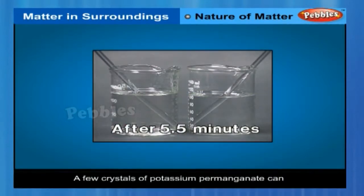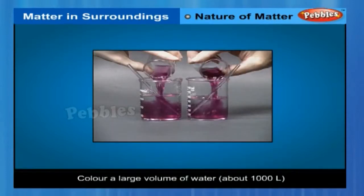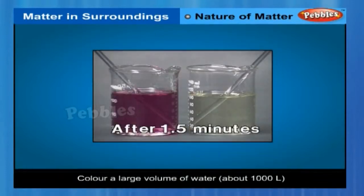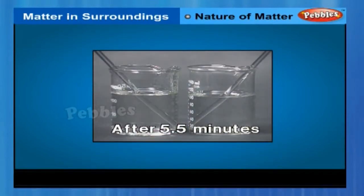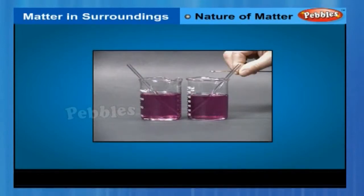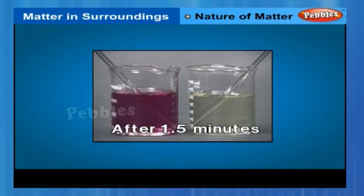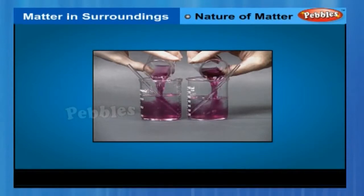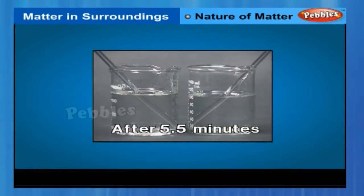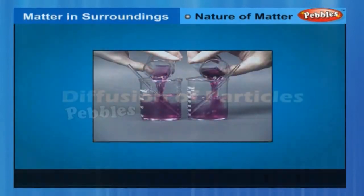This experiment shows that just a few crystals of potassium permanganate can color a large volume of water — say about 1000 liters. So we conclude that there must be millions of tiny particles in just one crystal of potassium permanganate, which keep on dividing themselves into smaller and smaller particles.